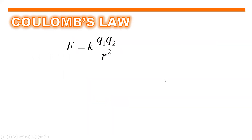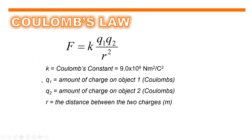To express Coulomb's Law: F equals k multiplied by q₁ multiplied by q₂, all over r squared. Where k is the Coulomb constant, which equals 9 times 10 to the 9th power newton meter squared per coulomb squared. q₁ is the amount of charge on object 1 in coulombs, q₂ is the amount of charge on object 2 in coulombs, and r is the distance between the two charges expressed in meters.